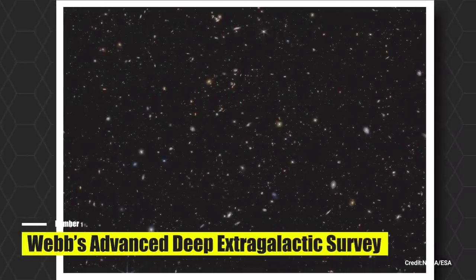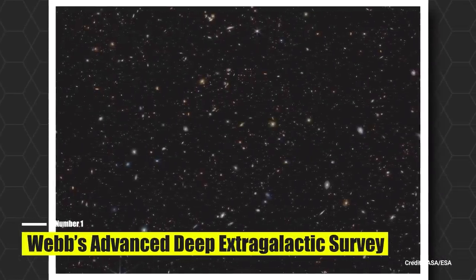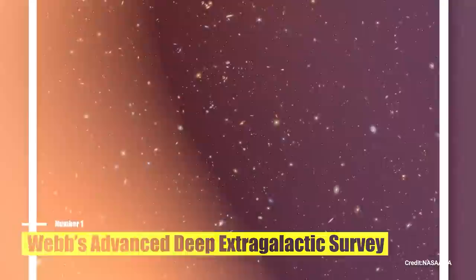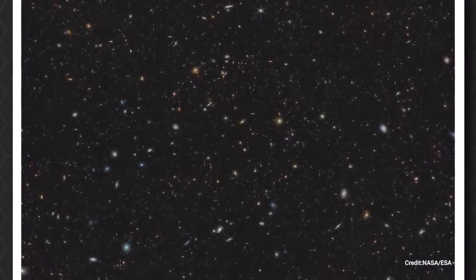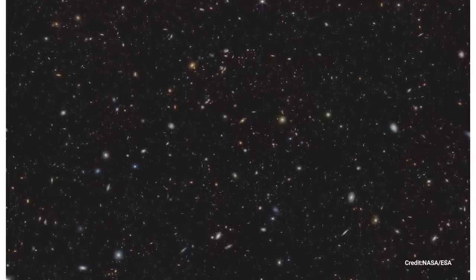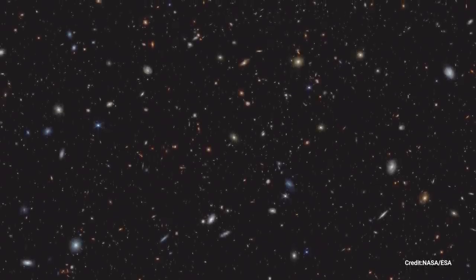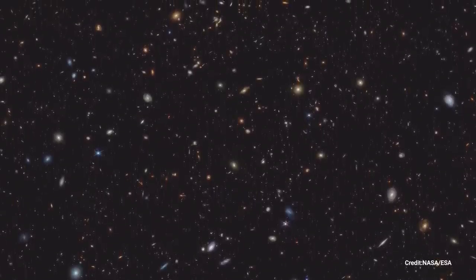Number 1. An engaging tour of Webb's Advanced Deep Extragalactic Survey. Step into the outer reaches of the cosmos with this captivating infrared snapshot, a jewel in the crown of NASA's James Webb Space Telescope. This image represents a tiny fragment of the celestial sea that is the sky, from a location we call Good South. Wondering about the name? It's short for Great Observatory's Origins Deep Survey South, but let's stick to Good South for simplicity.